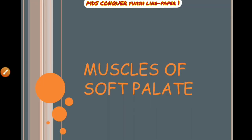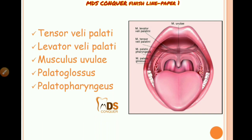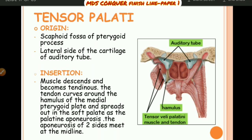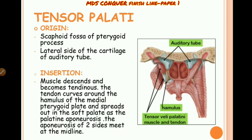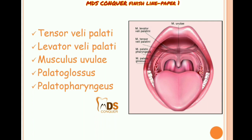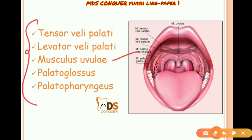The muscles of the soft palate include: tensor veli palatini, levator veli palatini, musculus uvulae, palatoglossus, and palatopharyngeus. You can draw these as a line diagram for reference.